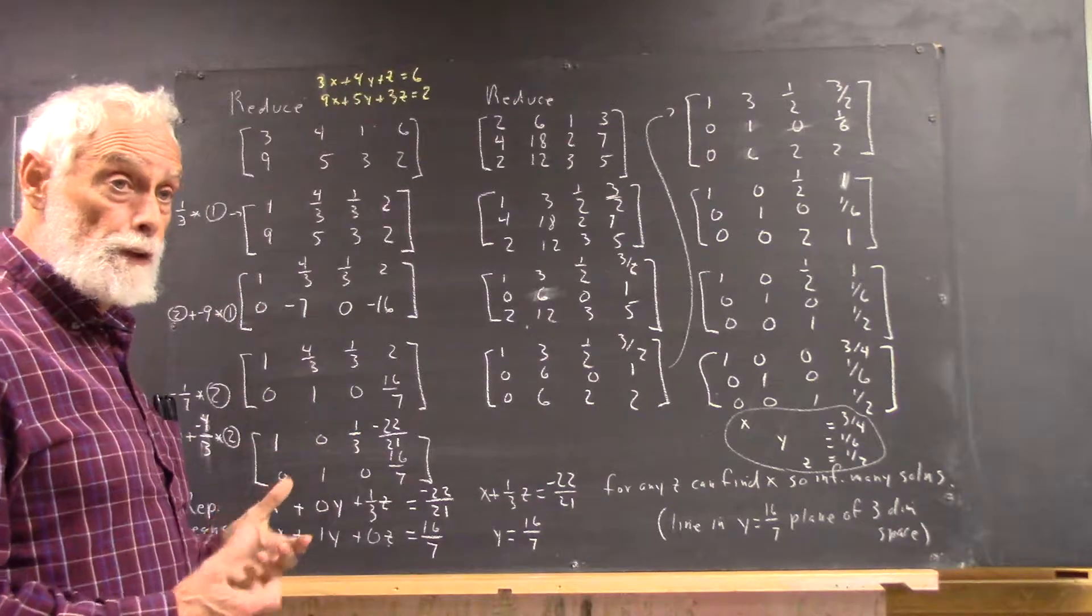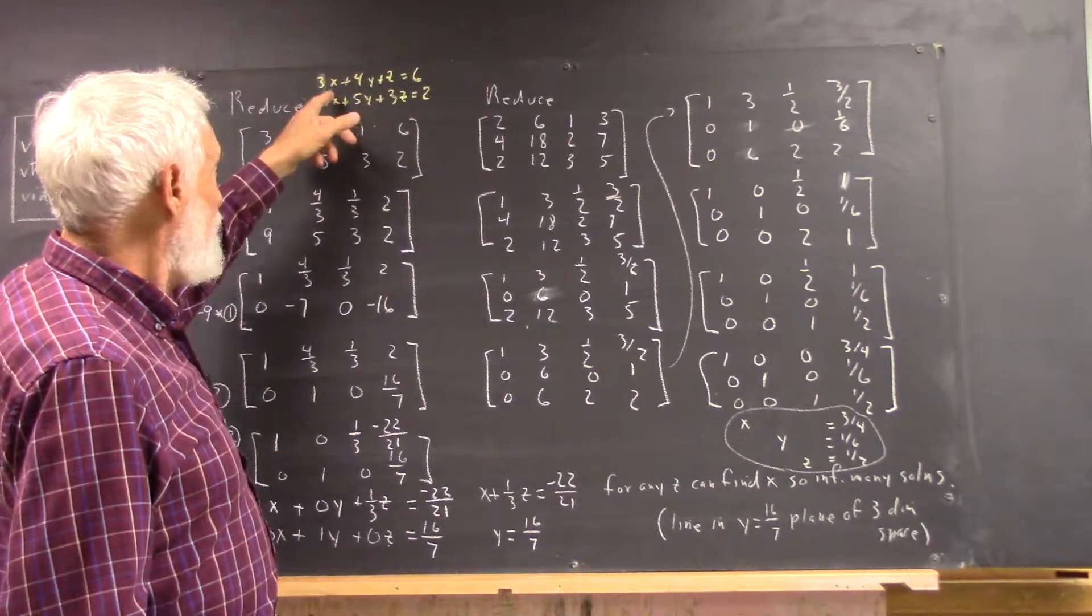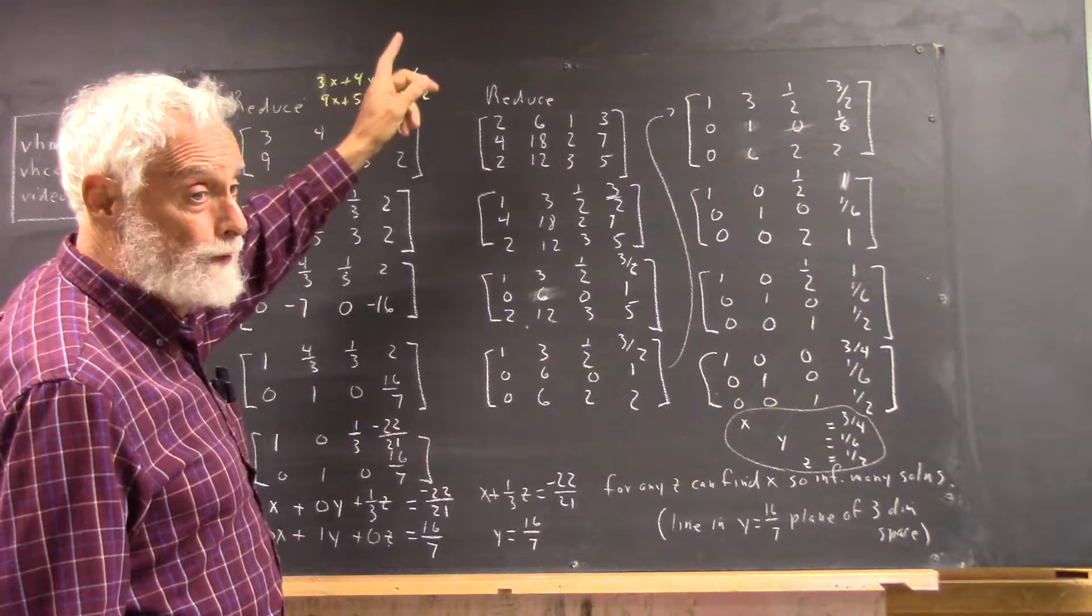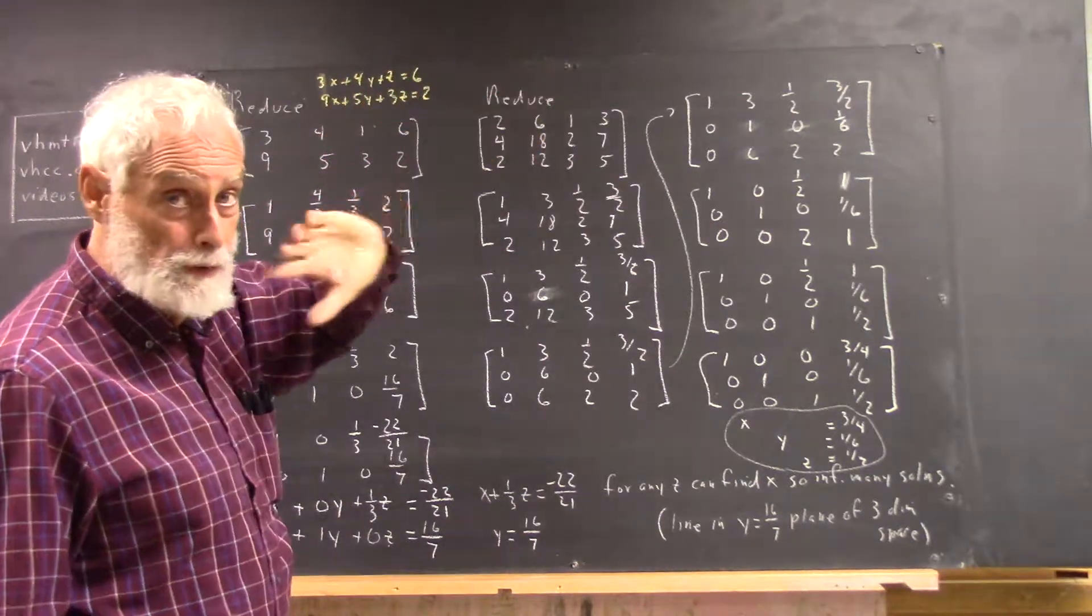And if you've got too many unknowns, you'd better go with, instead of x, y, z, x1, x2, x3, so you can do x4, x5, x6, as many as you need.